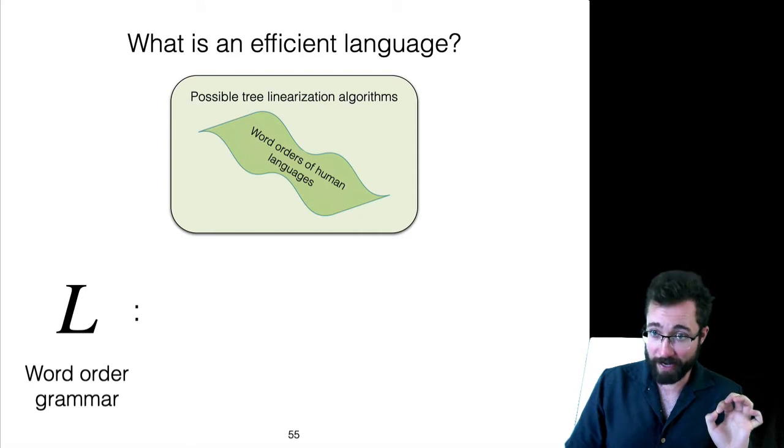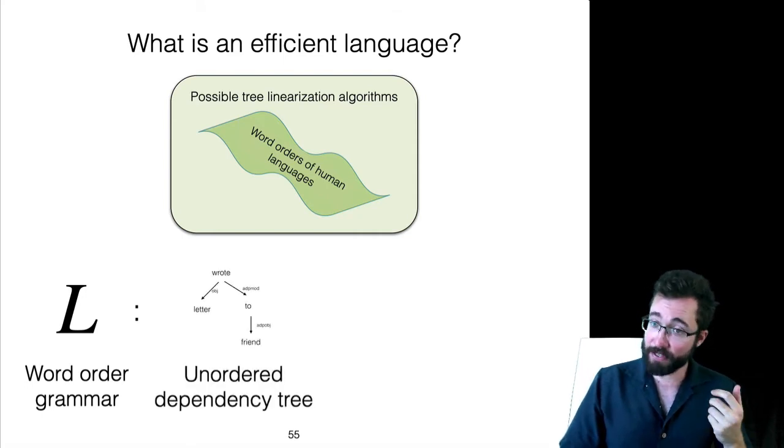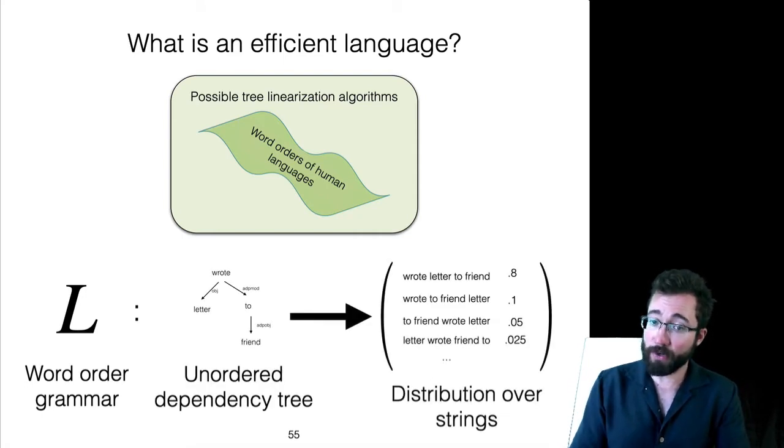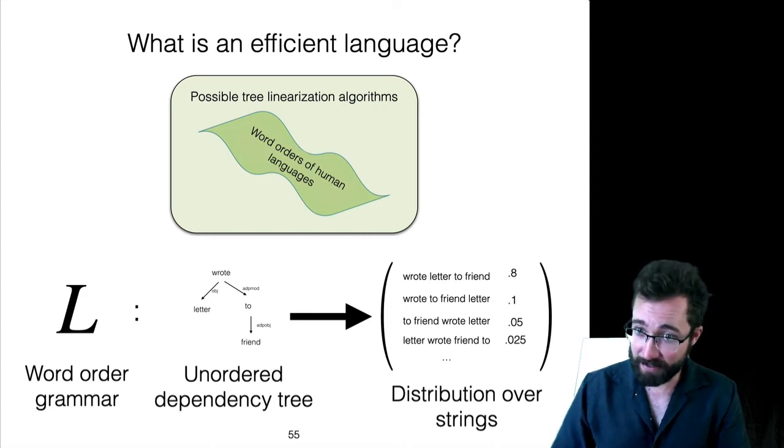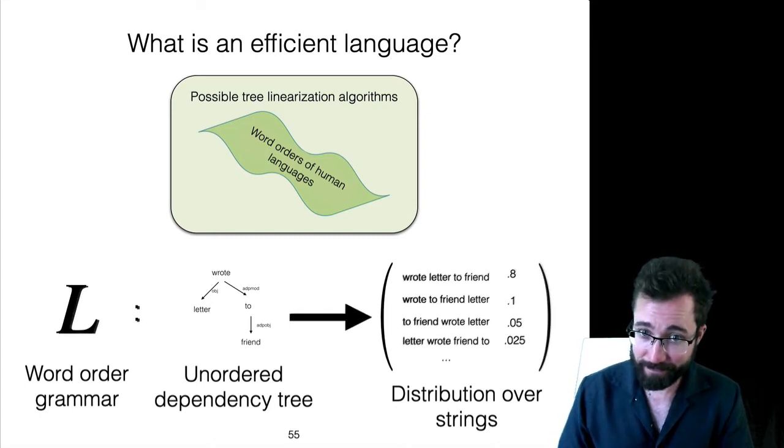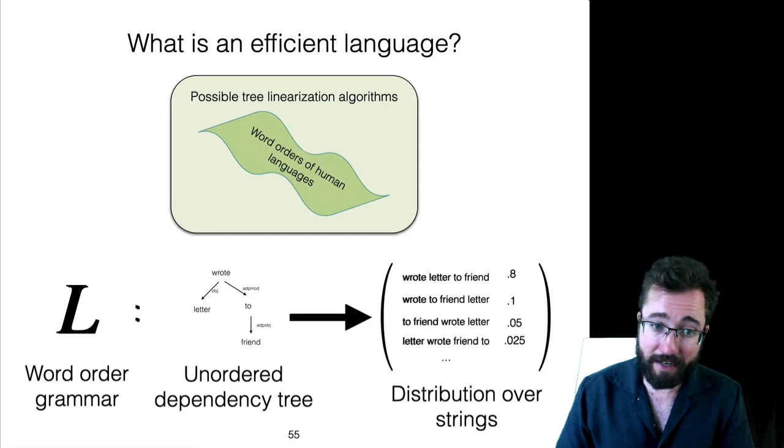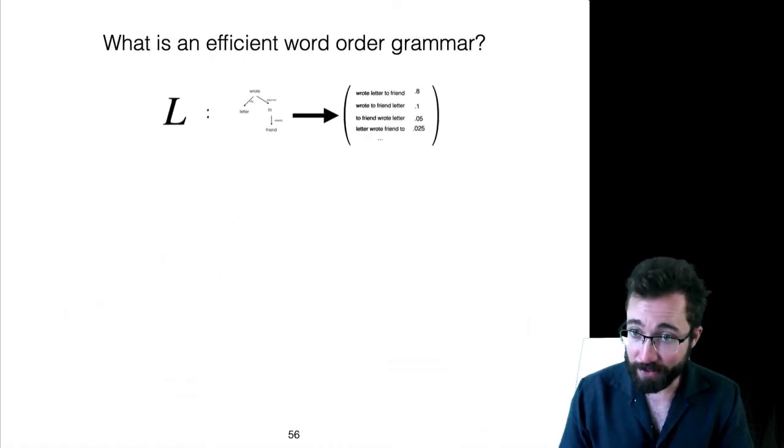Remember, we're thinking of a word order grammar as a function that maps an unordered dependency tree to a distribution over strings linearizing the tree. What we want to do now is actually characterize this function for natural language using a notion of efficiency and functional constraints.